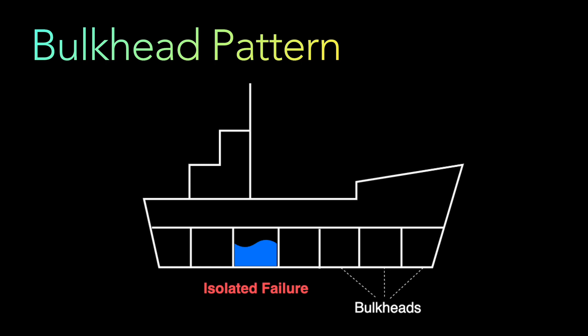If you look at the diagram, at the bottom you can see that if a water log has hit the ship, the water is contained within that one component. That one particular component is an isolated failure, but all the remaining compartments are working. So that isolated failure is not impacting the other parts of the ship, and the ship is still able to stay afloat. This is basically the basis of the bulkhead pattern.